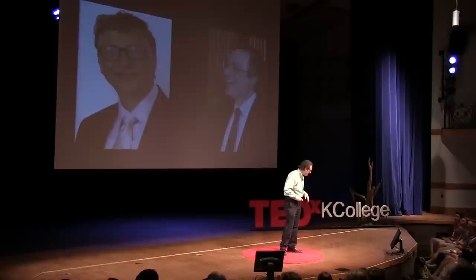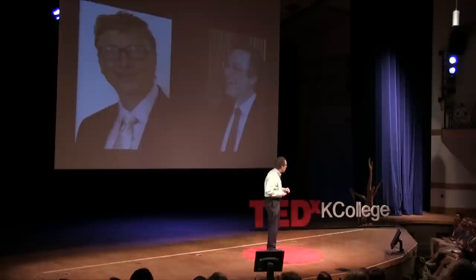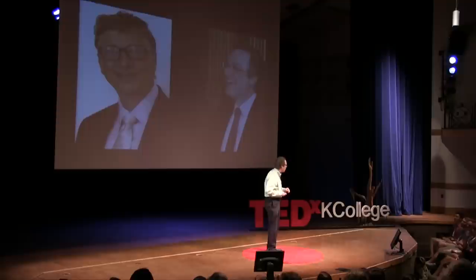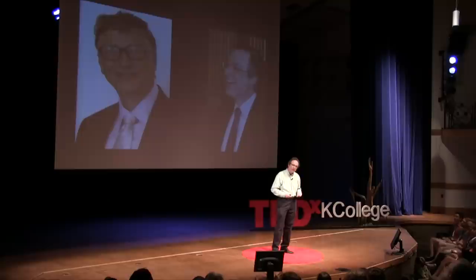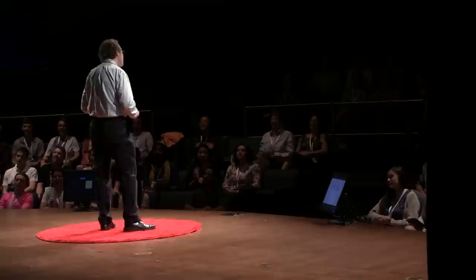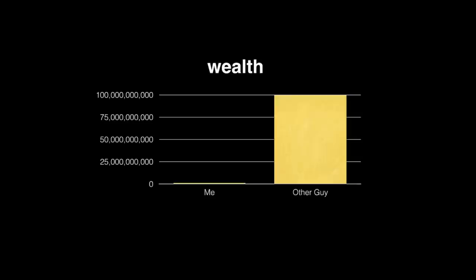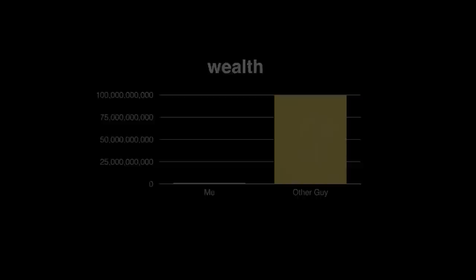The guy on the right has a PhD in physics. The guy on the left never even graduated from college. They're both hard workers, they're both very smart. But there's one big difference between the two of them. The guy on the right has $80 billion in assets. The guy on the left — me — you can maybe see a line down there, but it's very tiny. That $80 billion is almost a million times more than the mean family wealth in the United States, which is around $80,000.